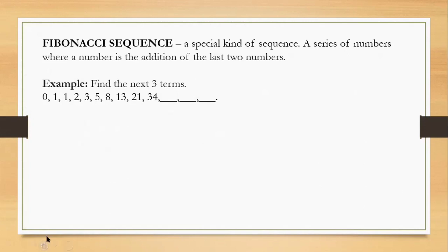Example. Try to look at the example. Find the next 3 terms. If we are going to add 0 plus 1, we will get 1 here. Can you see that? Next, if we are going to add 1 plus 1, we get 2. Next, 1 plus 2 we get 3. 2 plus 3 we get 5. 3 plus 5 we get 8. 5 plus 8 we get 13. 8 plus 13 we get 21. 21 plus 13, we will get, how much? What is the number? It's 55. That's right, 55.